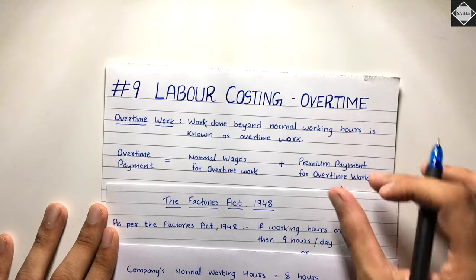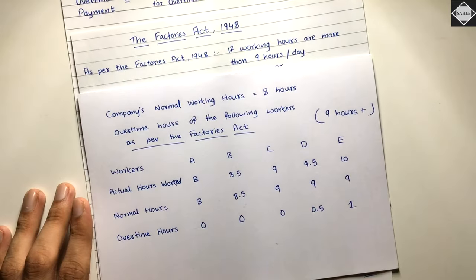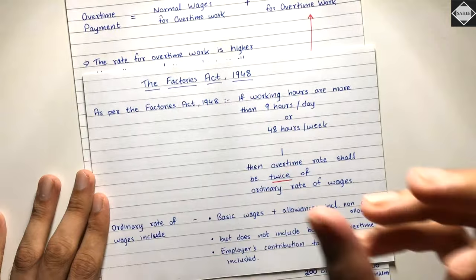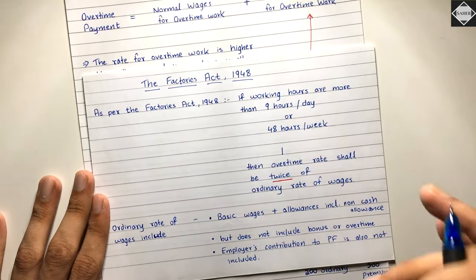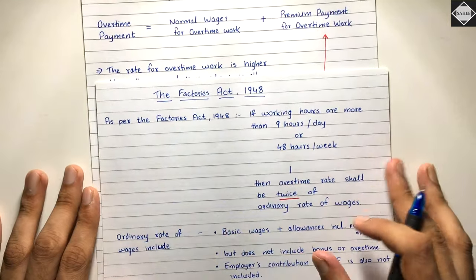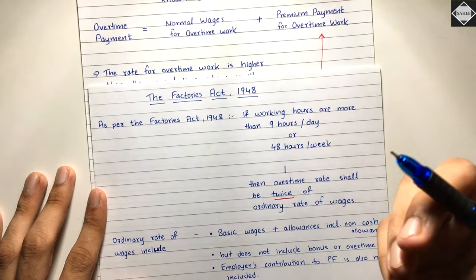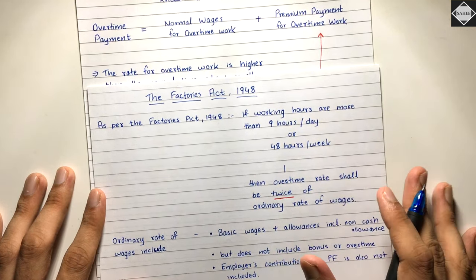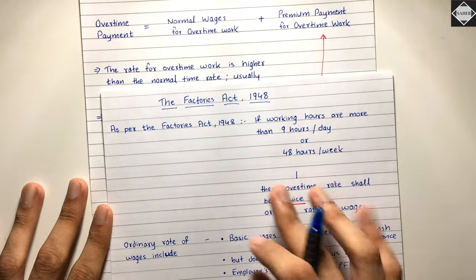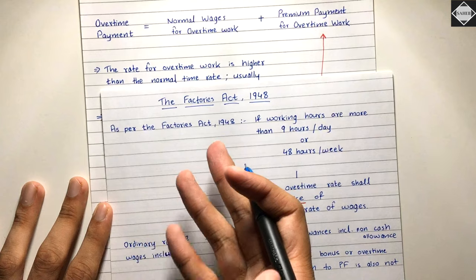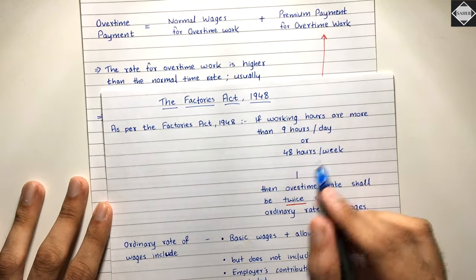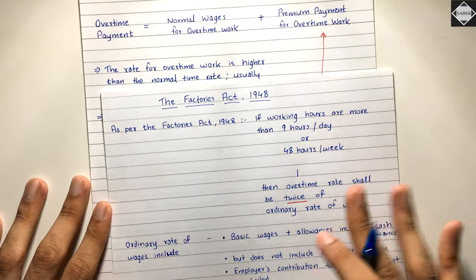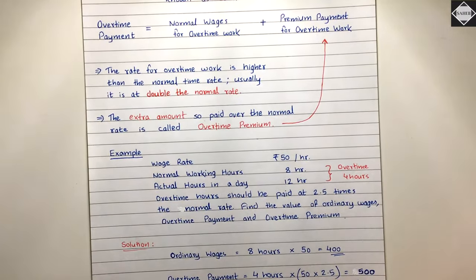For workers D and E, overtime payment includes normal wages for overtime work at the normal rate, plus the overtime premium. When solving problems under the Factories Act, we calculate from both the daily perspective and the weekly perspective — whichever gives the higher amount is selected. This is because the Factories Act is in the interest of workers, so workers should receive the greater benefit.